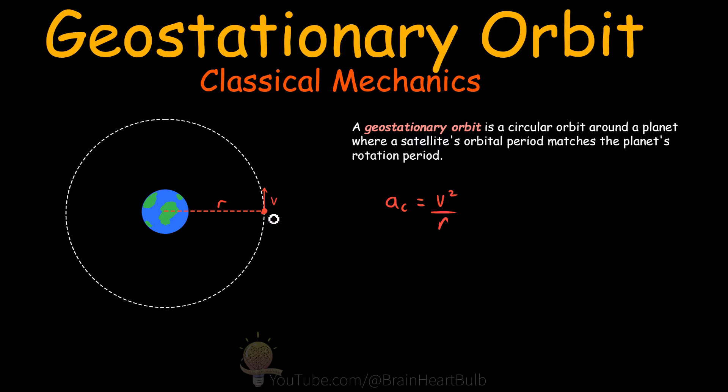And v is the velocity of the satellite in its orbit. The centripetal acceleration is directed towards the Earth, or towards the centre of mass of the planet. And this acceleration keeps our satellite in a perfectly circular orbit.